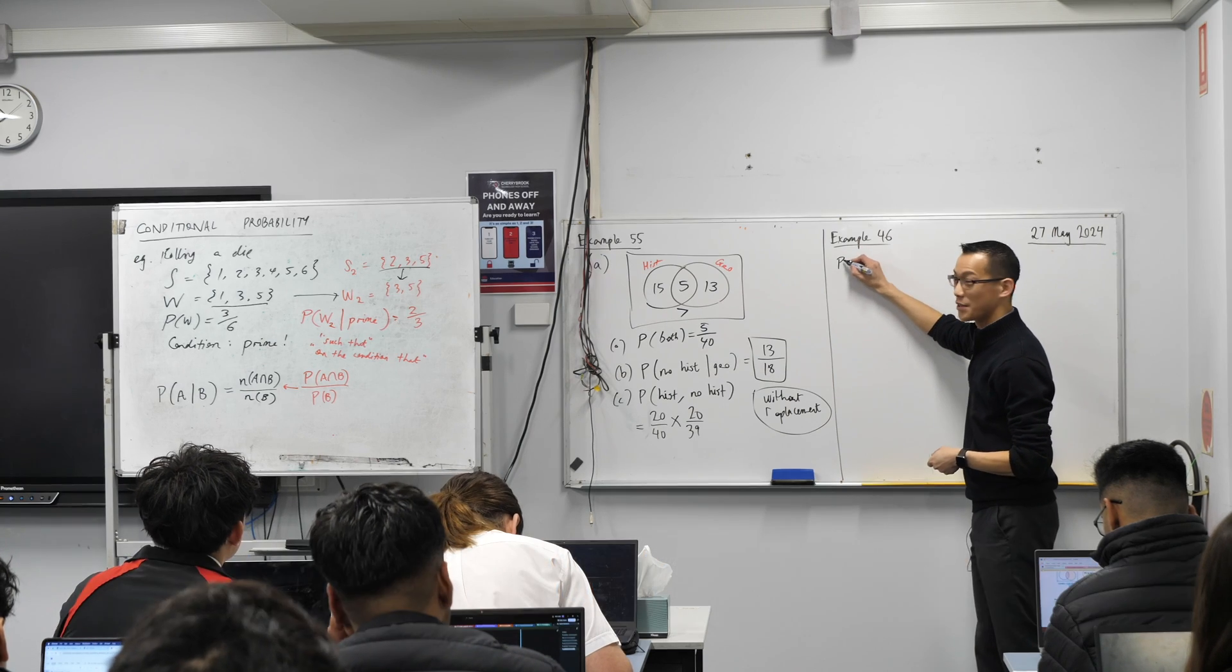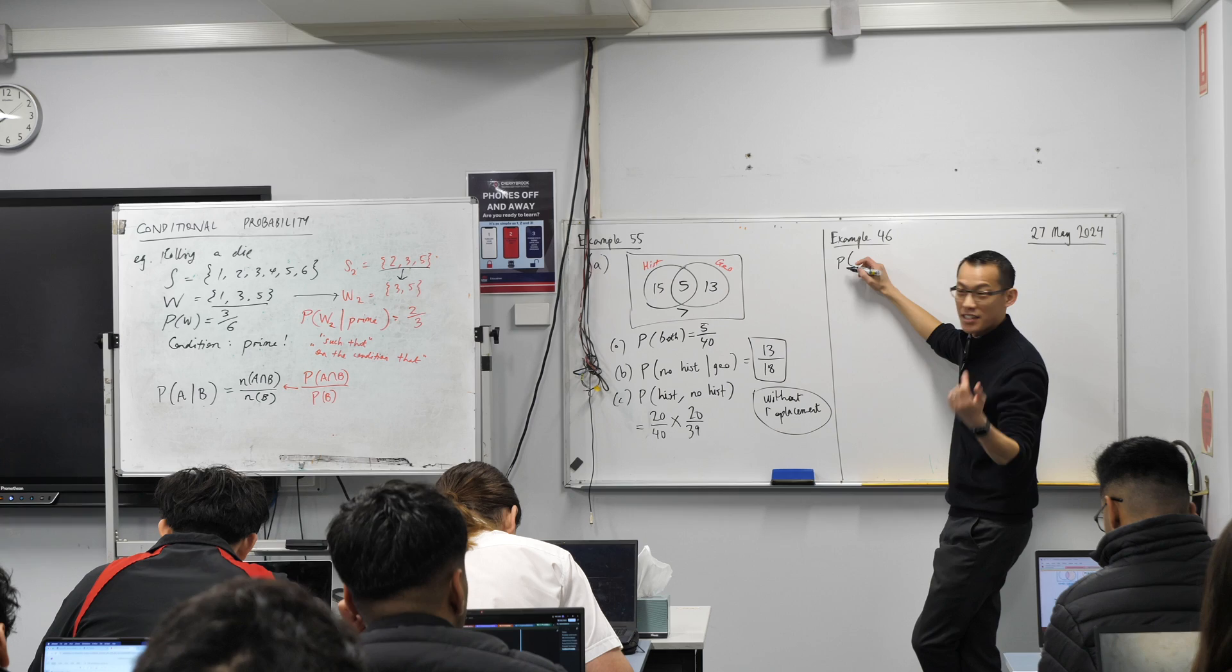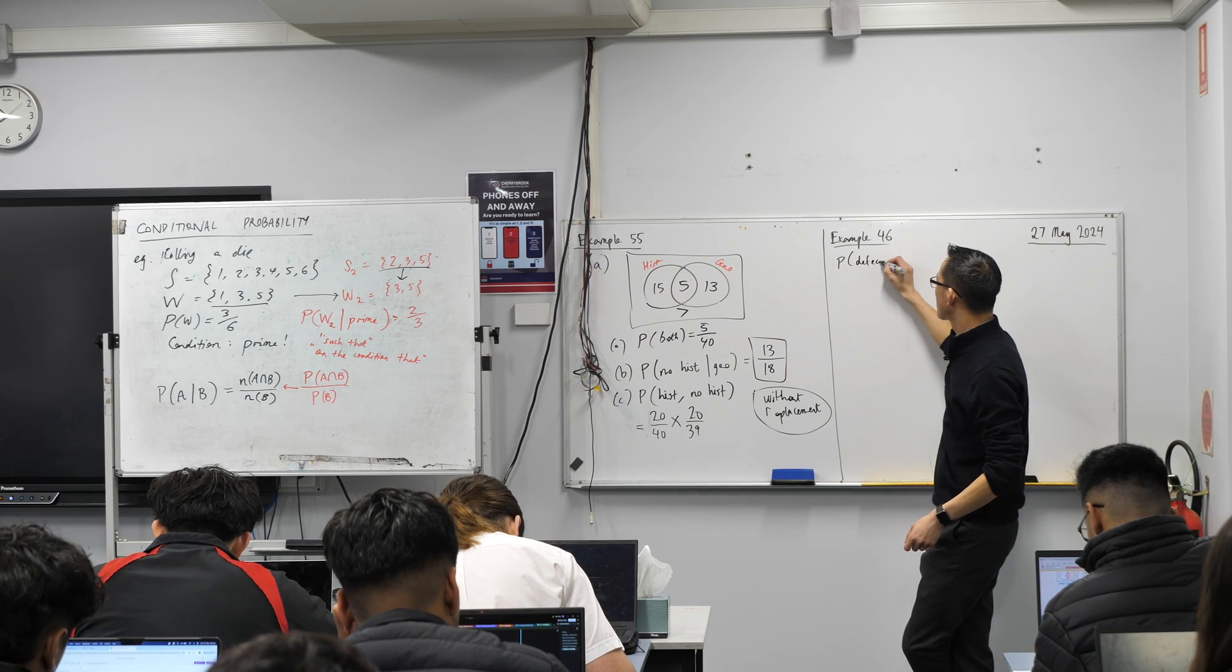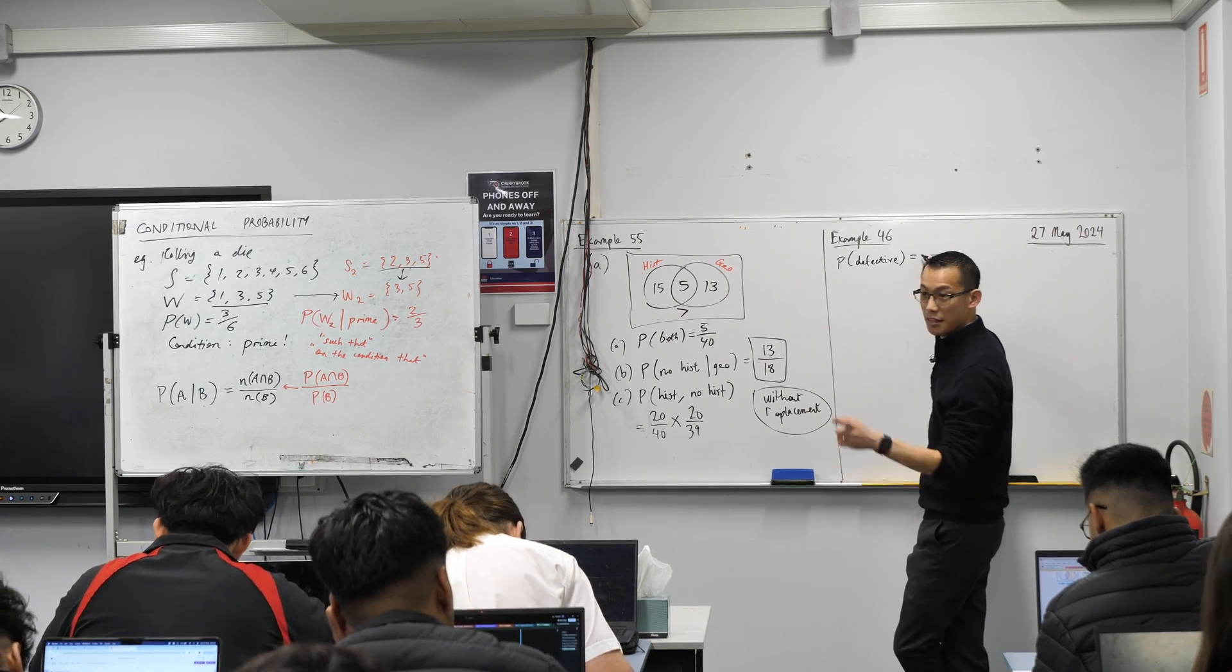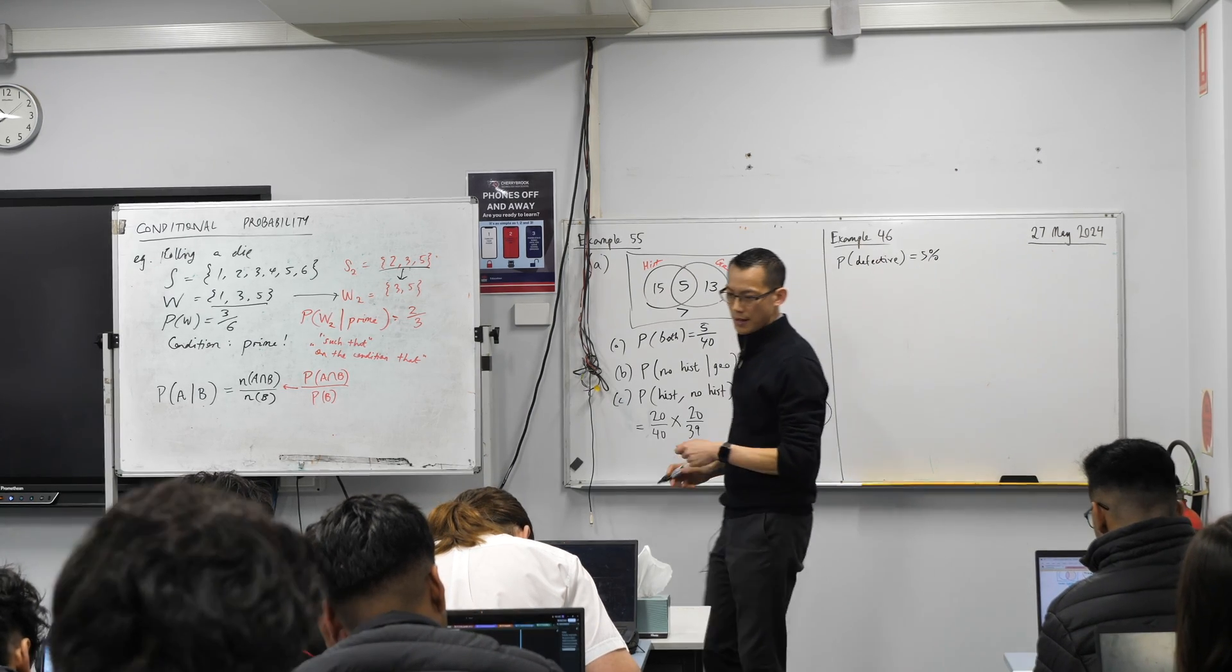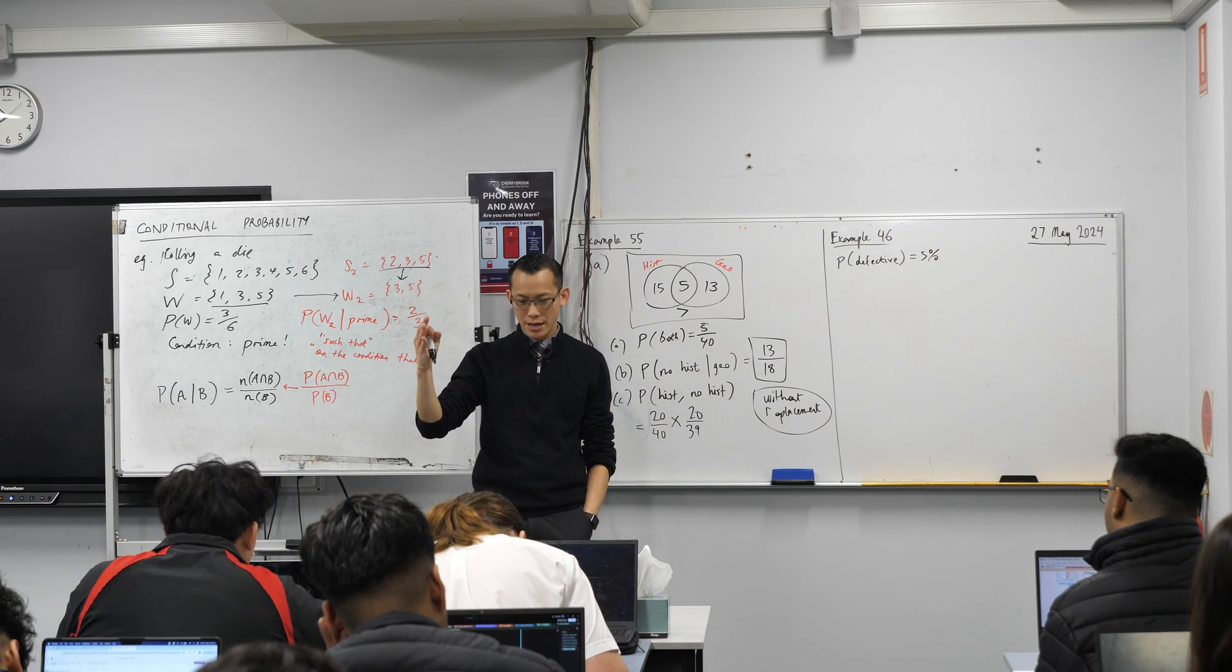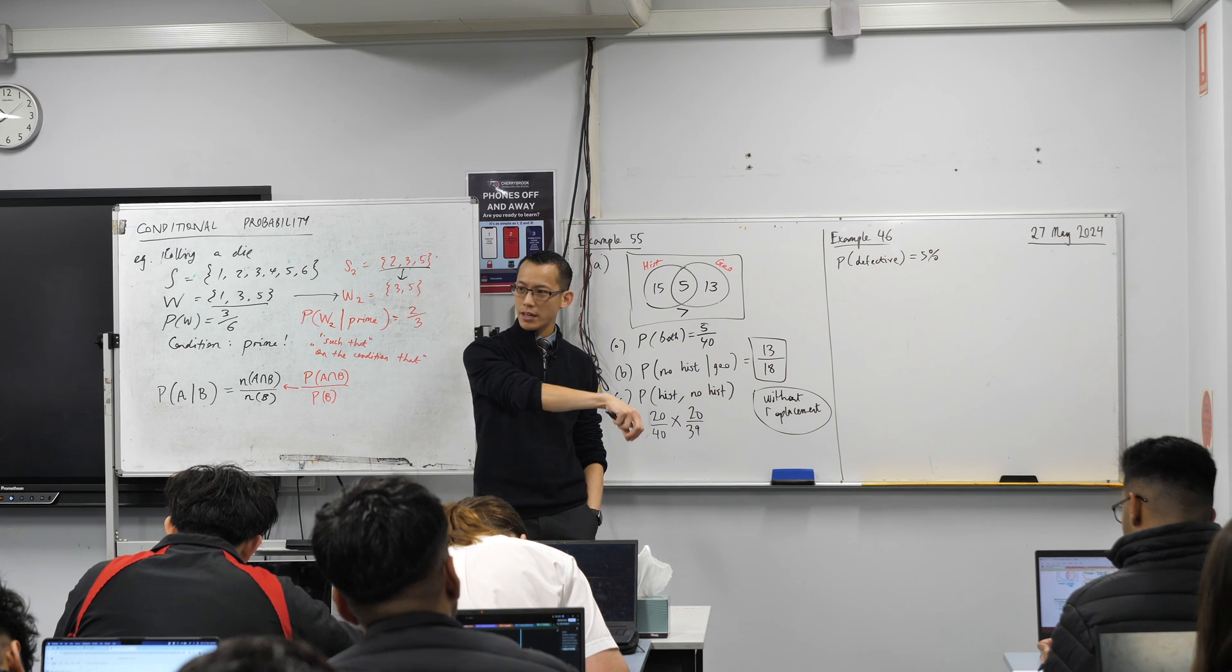We've got a probability of, how would you write this? Defective, that'll do. Probability of something being defective equals 5%. Great. Happy times.